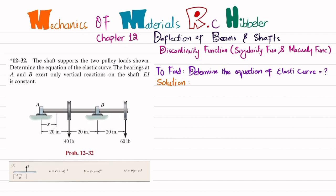Let's start with the solution. The first step: if you remove the bearing at point B, it exerts only a vertical reaction force — that will be RB. If you remove the bearing at point A, you will have a reaction force which will be downward. You can take it in any direction and from the values you will judge whether you chose the right direction. We will find RA and RB using equations of equilibrium.